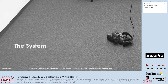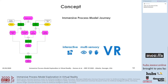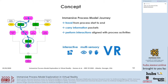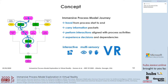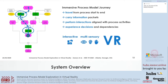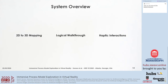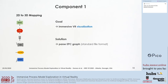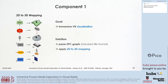The concept of our system is to provide an interactive and multi-sensory virtual reality journey that leads the user through the process graph. Users will travel from process start to the end of the process and carry information packages along the way. They will perform interactions aligned with the real-world process activities and experience the decisions and dependencies within the graph by interactively controlling the process flow at logical connector nodes. Our system is based on three components, the first of which is the 2D to 3D mapping.